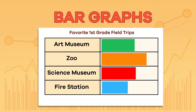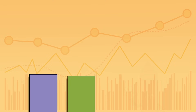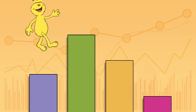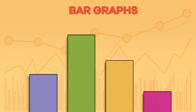Bar graphs. This bar graph is giving us the same information as the pictograph, but the bar graph uses bars instead of pictures to give us the same information. Now, let's create another type of bar graph, where the bars are facing the other way.